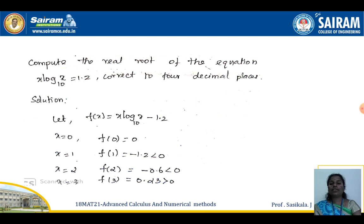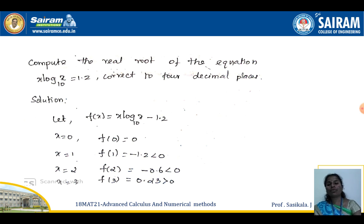The question asks us to be correct to 4 decimal places, so we may need to extend our iterations accordingly. To find a and b, we check where we get a sign change in f(x) = x·log₁₀(x) − 1.2. We start by substituting integer values of x.